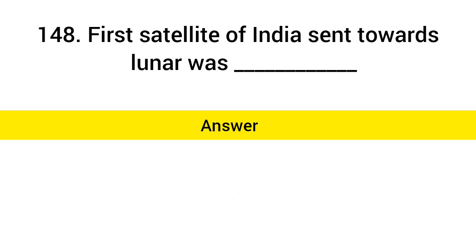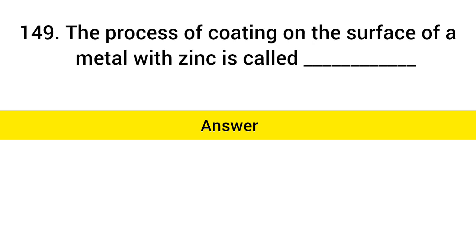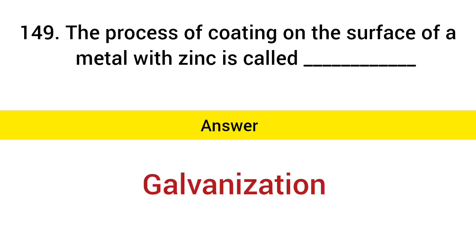First satellite of India sent towards the lunar was? Answer: Chandrayaan One. The process of coating the surface of a metal with zinc is called? Answer: Galvanization.